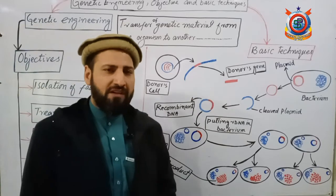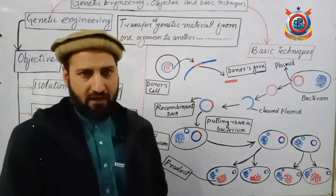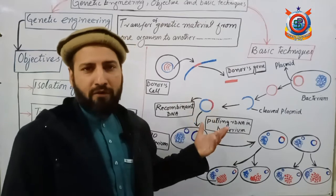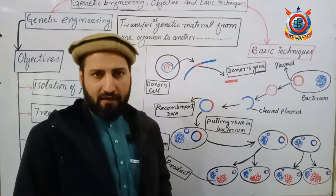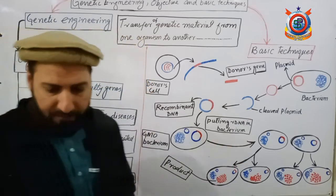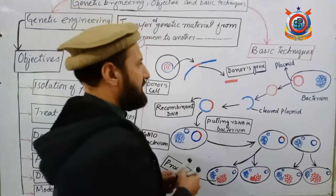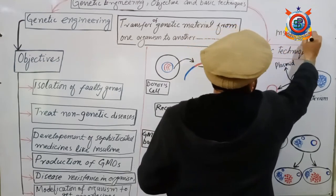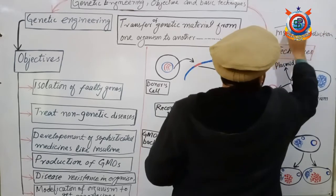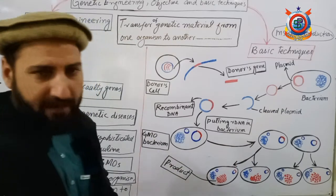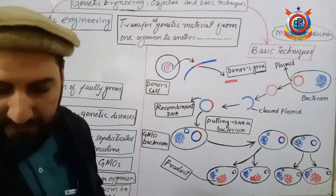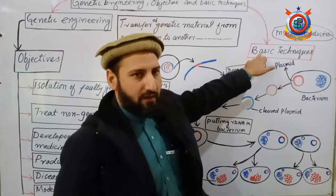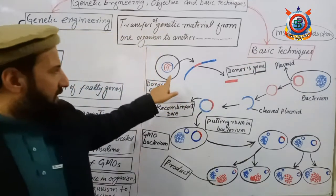Now our last topic is basic techniques — how genetic engineering is done. This diagram shows the technique of how a bacterium is modified to produce a specific product. As an example, we will look at how genetic engineers produce insulin, and by learning this example you will understand both the basic techniques and the process of insulin production.